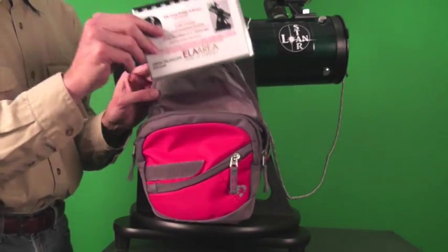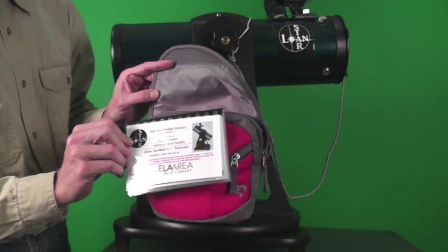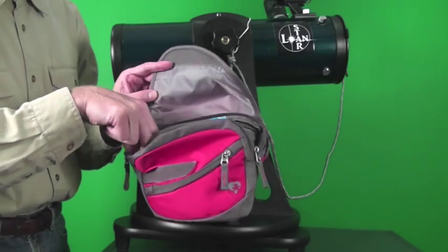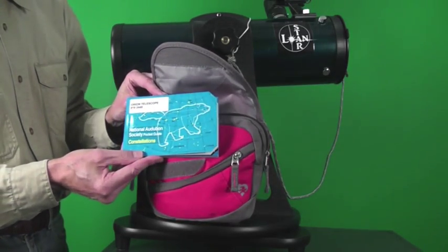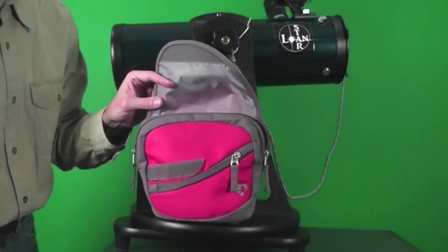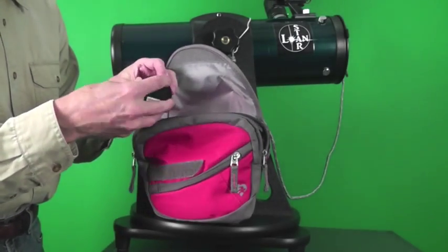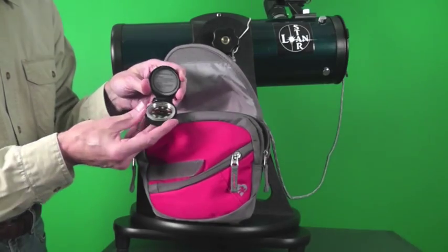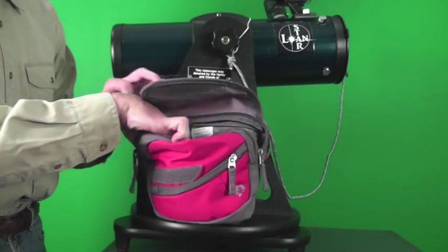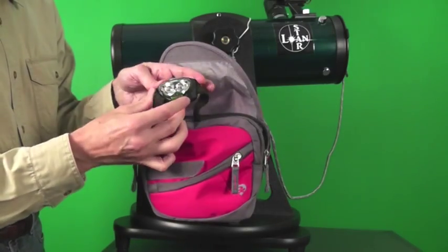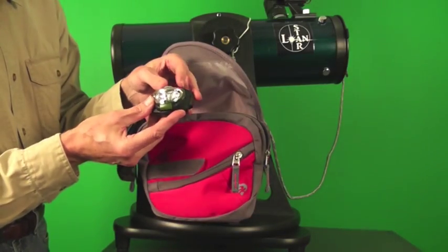What's in the case? A handy instruction manual, the National Audubon Society pocket guide to constellations, a compass to help you orient yourself, and a headlamp. Use the red light to read in the dark.